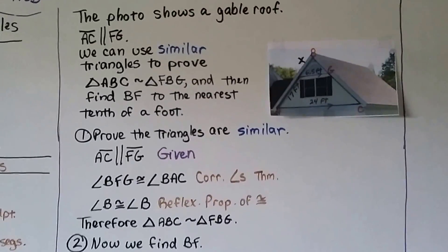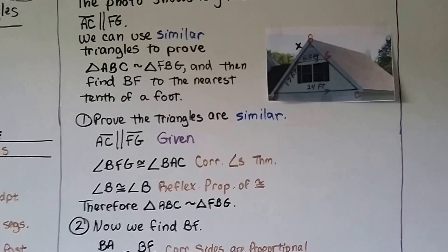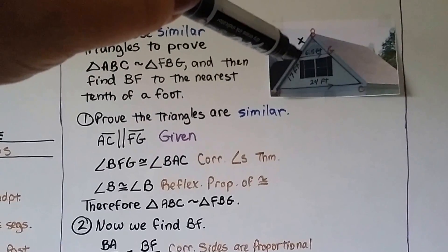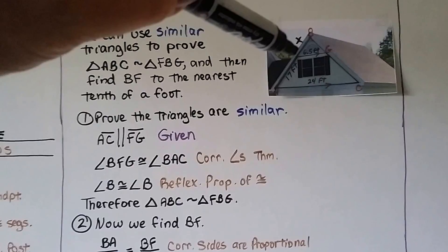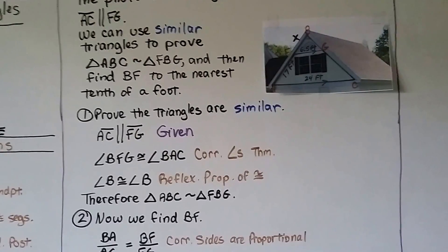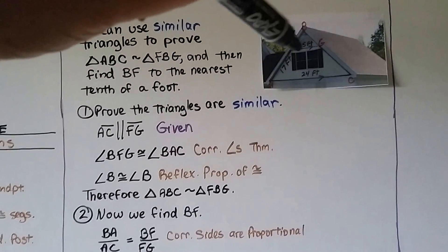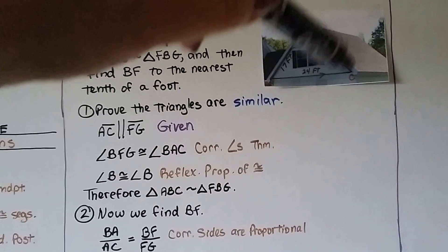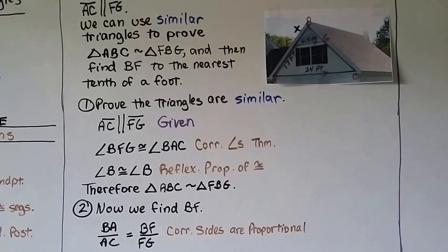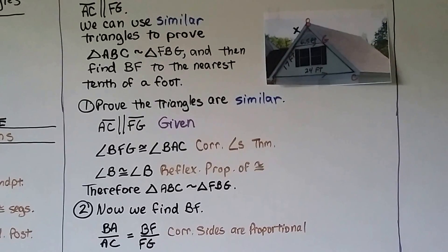So the first thing we do is prove the triangles are similar. Segment AC is parallel to segment FG. That's given. Angle BFG, this little one right here by the 6, is congruent to BAC, this big one down here, because of the corresponding angles theorem. And angle B is congruent to angle B. So the angle B for the little triangle is congruent to the angle B for the bigger triangle. That's the reflexive property of congruence. Therefore, triangle ABC is similar to triangle FBG.